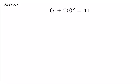Okay, this one is not x squared plus 10 squared, right? This is a binomial that's being squared. So if I wanted to just have an x, I can square root both sides of the equal sign.